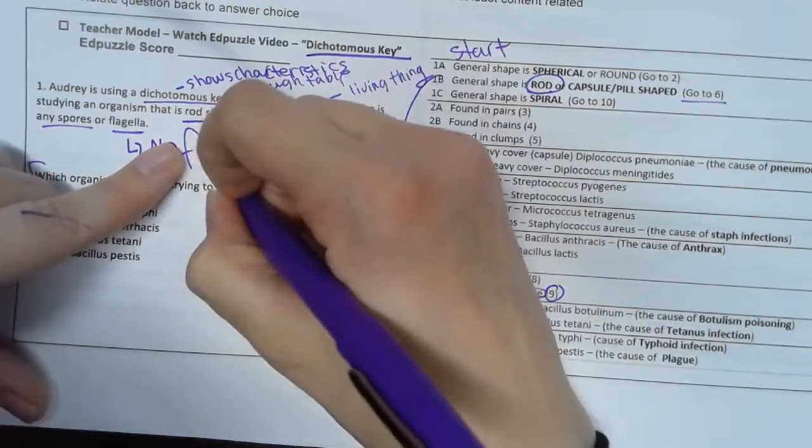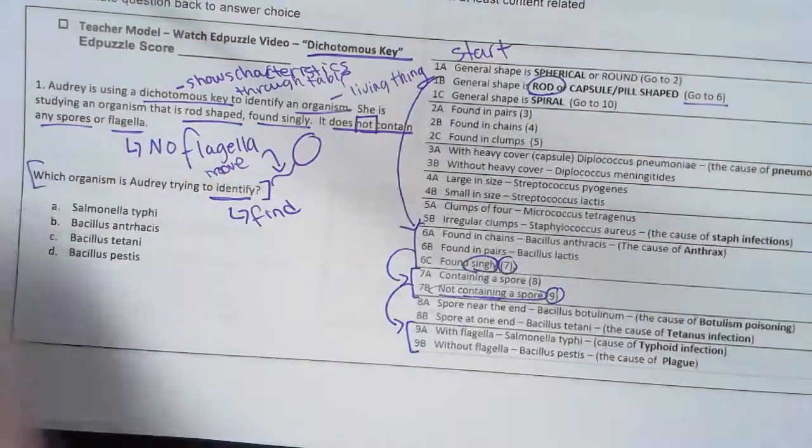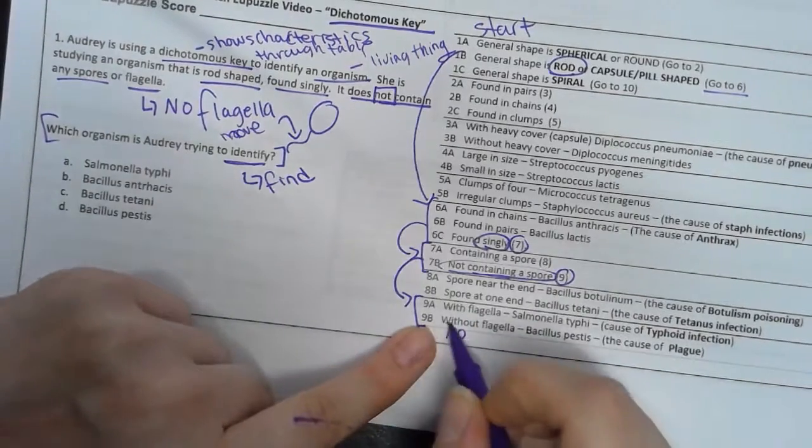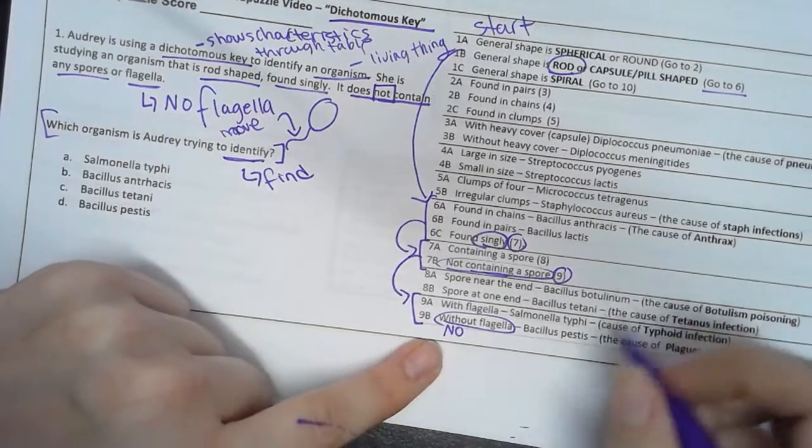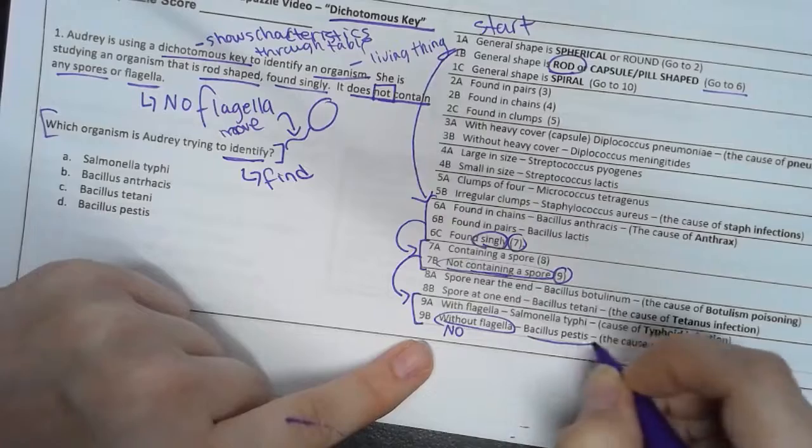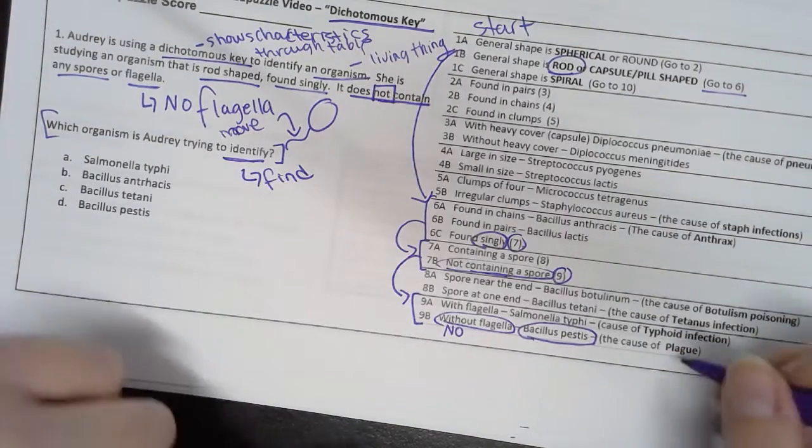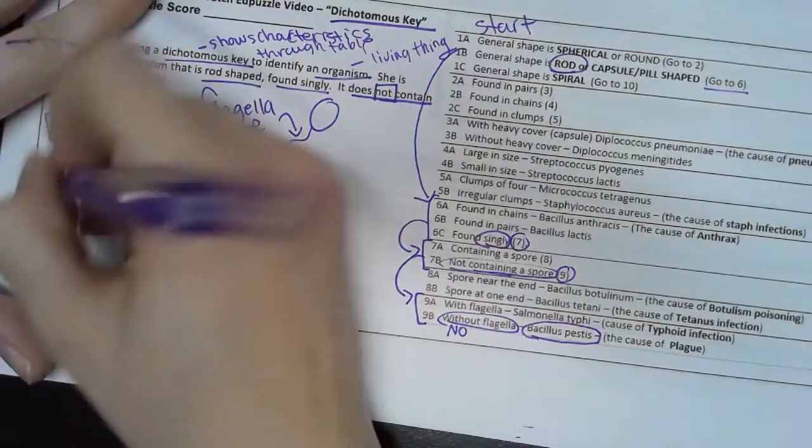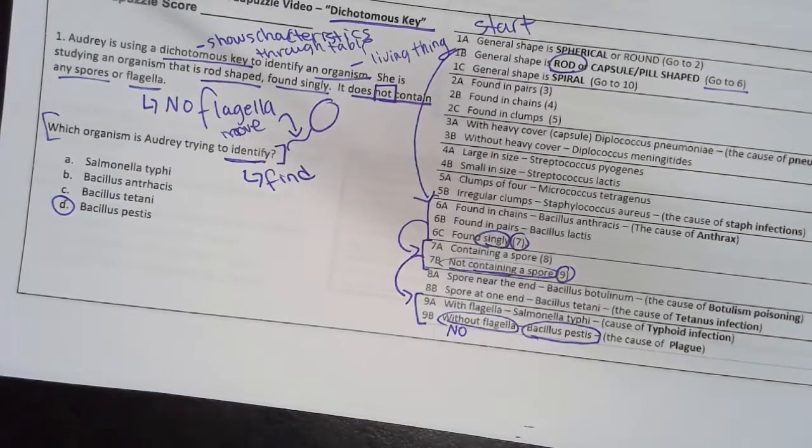All right, no flagella, which means without flagella - yay! All right, that means that my answer is Bacillus pestis. This is actually the cause of the plague - black plague - terrible, terrible disease. But my answer is D, and that's how you should annotate that question and get started with the rest of your fun dichotomous key.